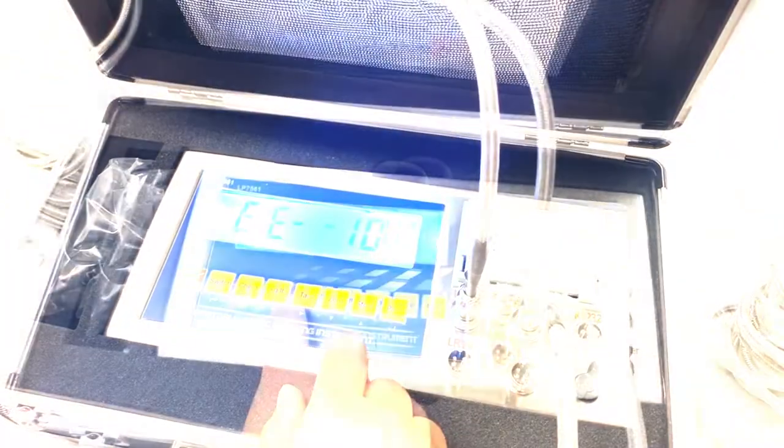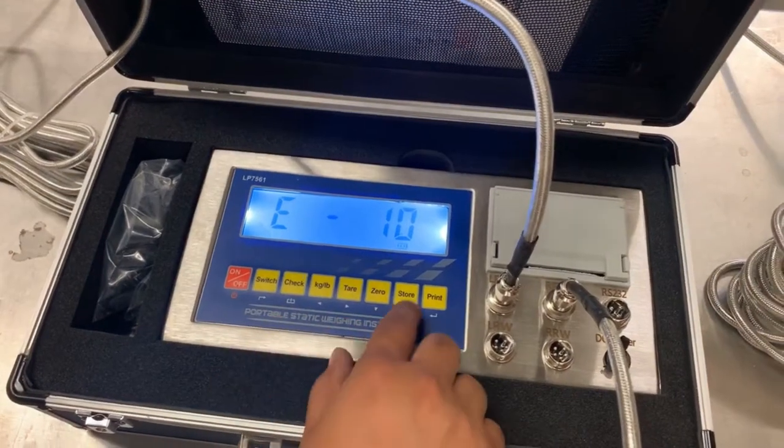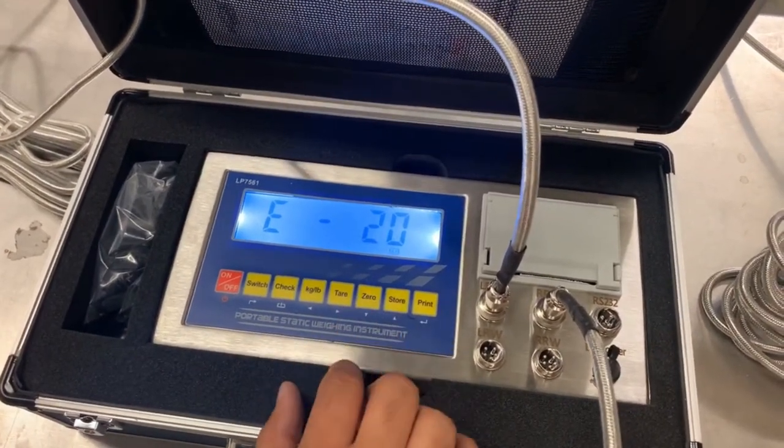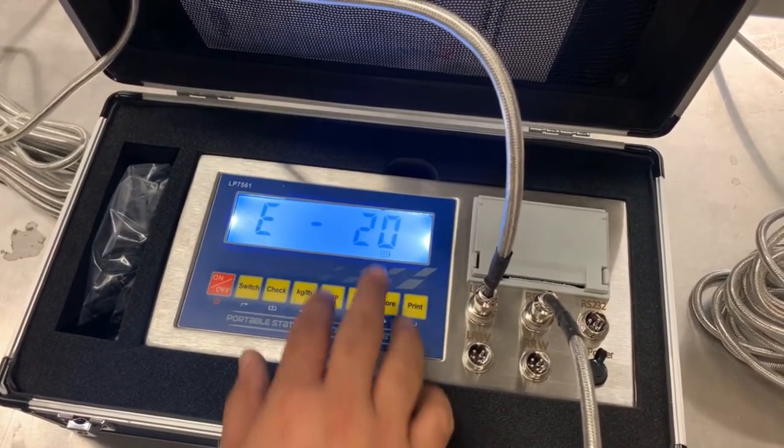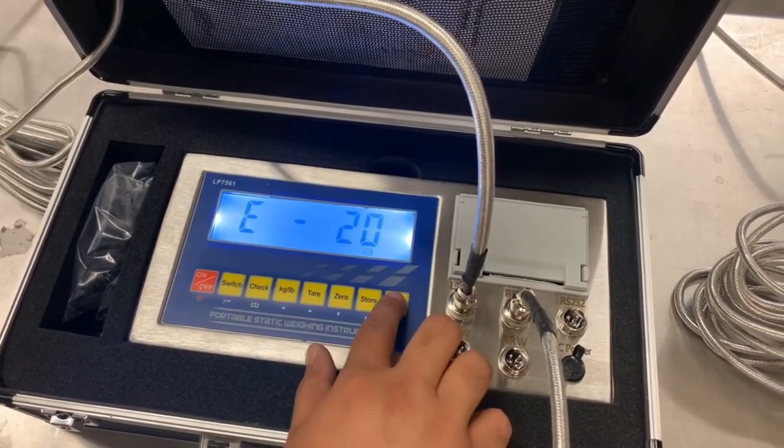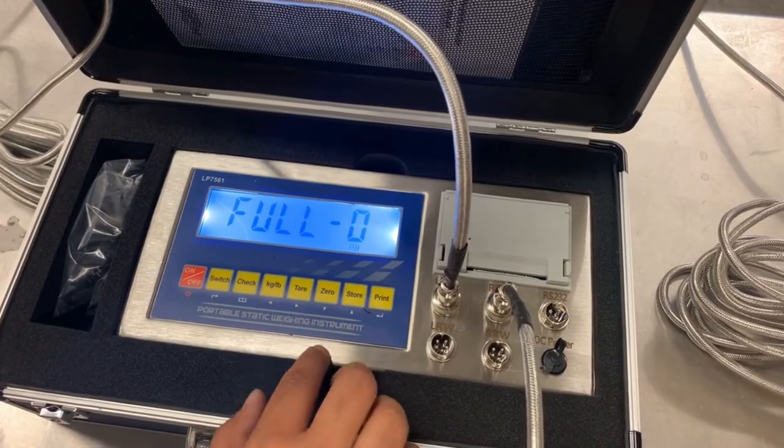In this area you want to choose 20 pounds. This is where we input the accuracy. Usually with weight pads it's 20 pound accuracy. Press print.